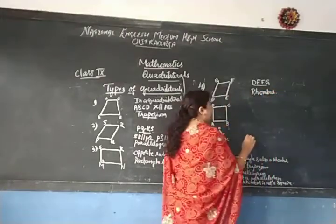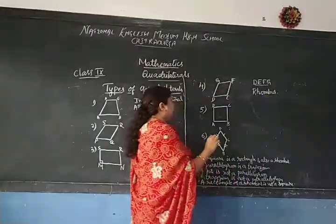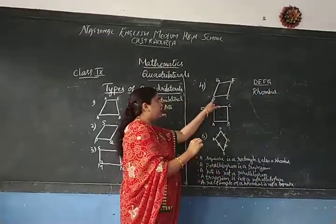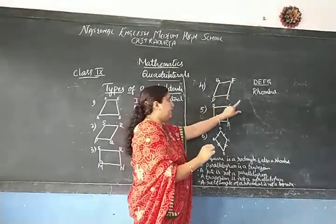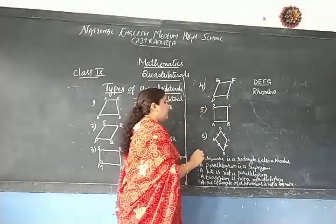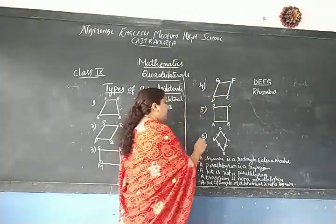Rhombus. In quadrilateral DEFG, all the sides are equal. That is called as the rhombus.